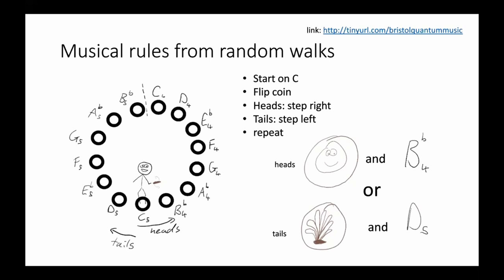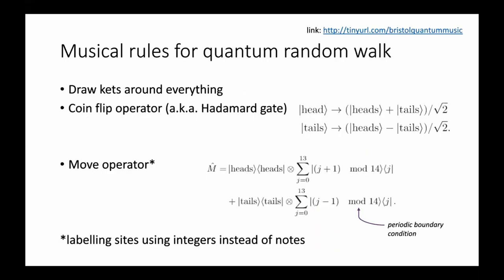This classical walk produces dynamics where we only move one step at a time in our melody. To make the system quantum, we simply draw kets around everything. The coin flip becomes the Hadamard gate, mapping tails to a superposition of heads and tails with opposite parity. Then we have a movement operator: if we label sites with integers, seeing the heads outcome means stepping right (increasing our index), seeing tails means decreasing our index, with a mod operation enforcing the periodic boundary condition.